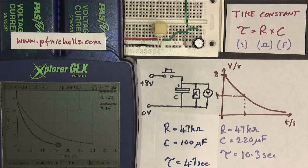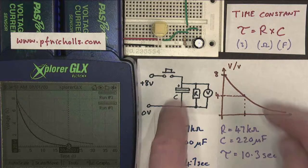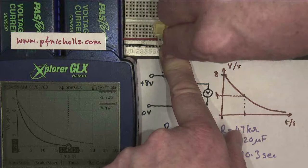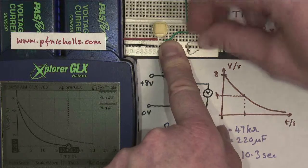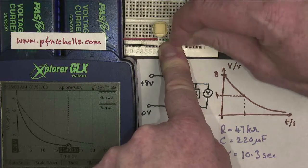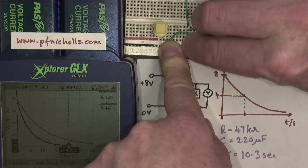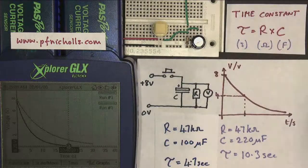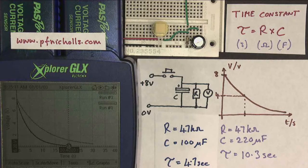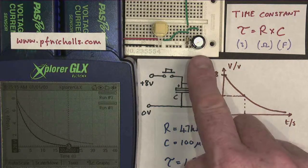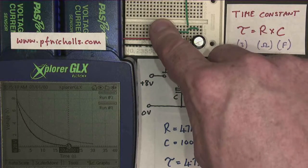And if we do exactly the same, if we stop that, without doing the calculation, if we take out both of these, and we put in our biggest values, if we put in our 100 kiloohm resistor, and we put in our 220 microfarad capacitor, and we do a little bit of mental maths, what we should find is that the time constant now for this pair is 22 seconds.